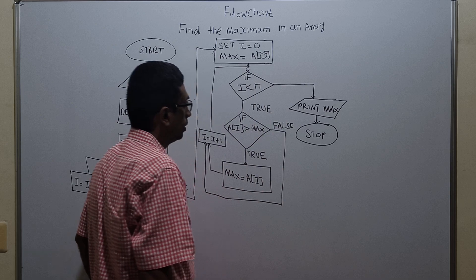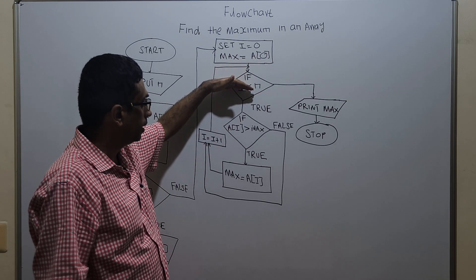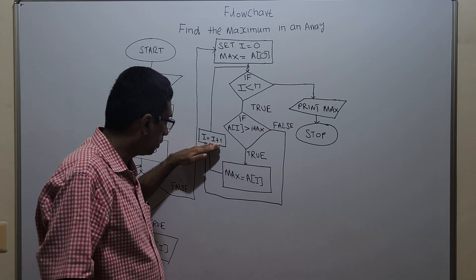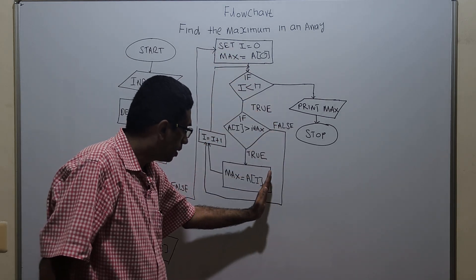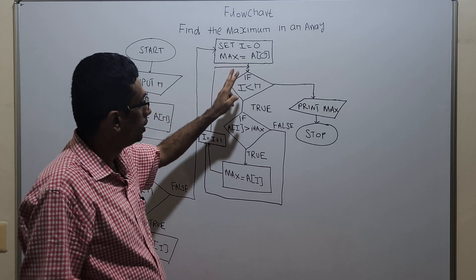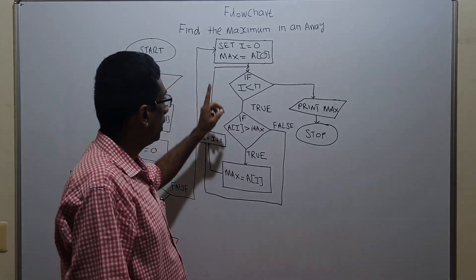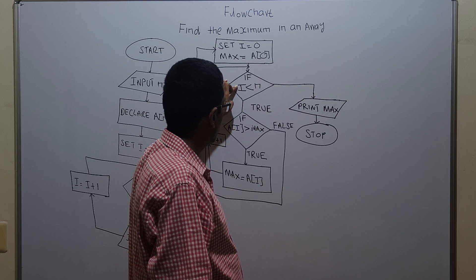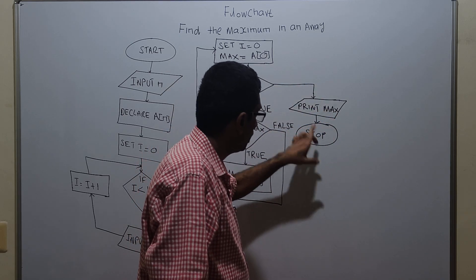So this is the loop: I set i equal to 0, max equal to a of 0 (the 0th element). If i less than n is true, I check a of i greater than max. If true, assign max equal to a of i and increment i. If false, bypass the assignment, increment i, and loop back. When the complete loop is over, the maximum element is stored in max. When i reaches the value n, i less than n is false, the loop ends, and the value in max gets printed — logical stop.